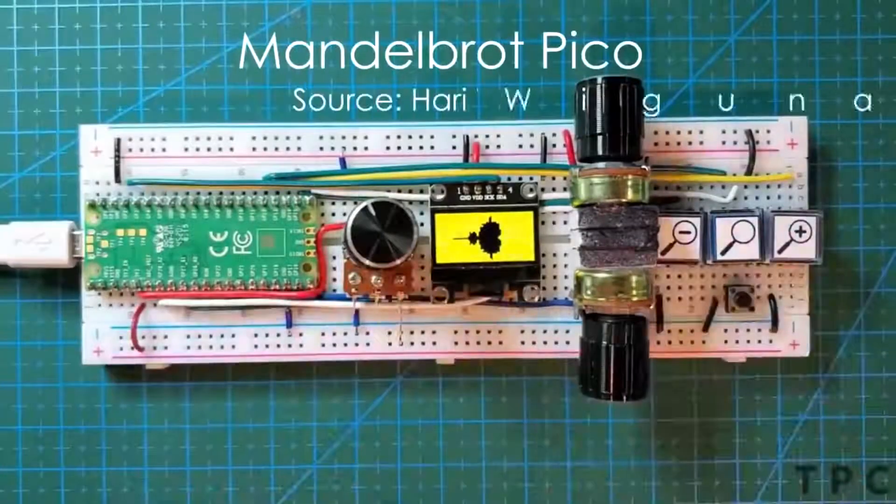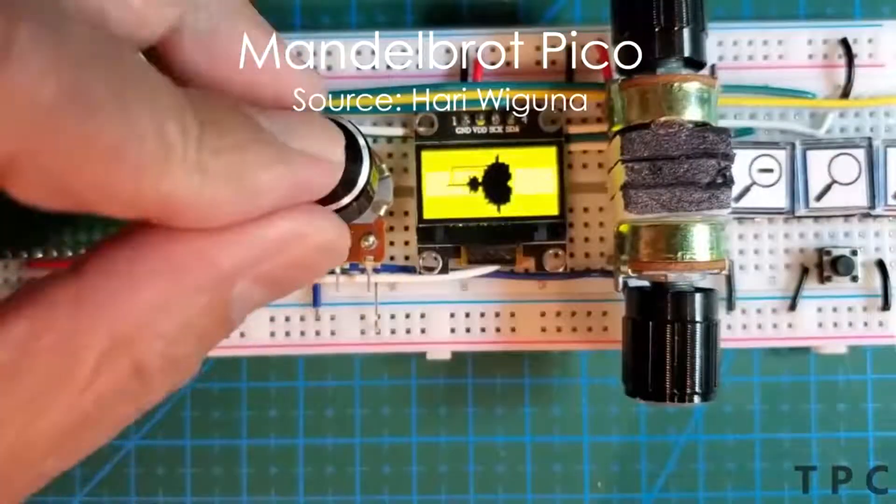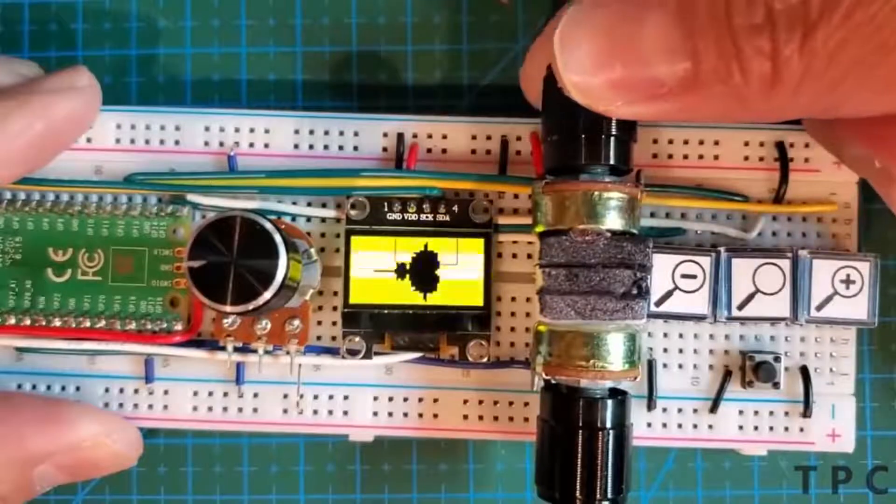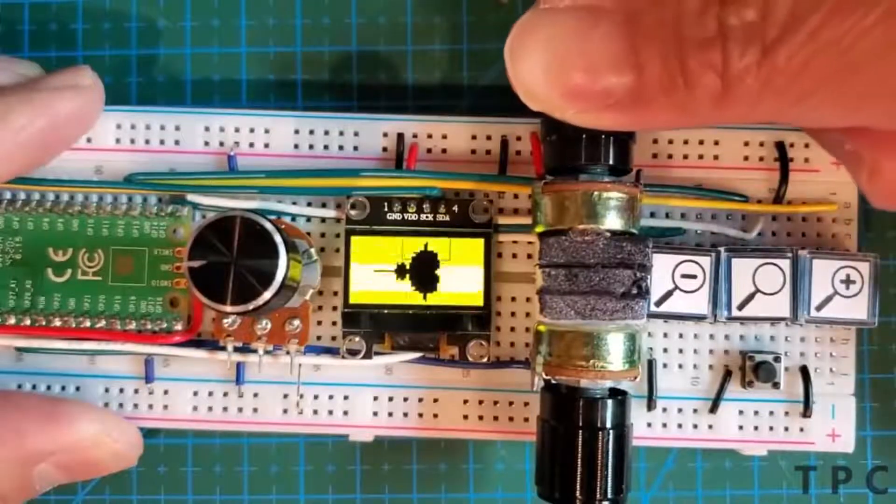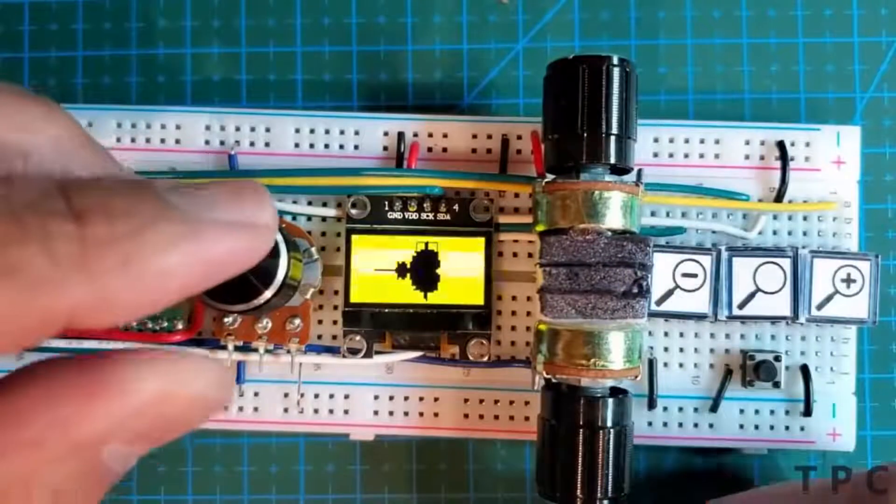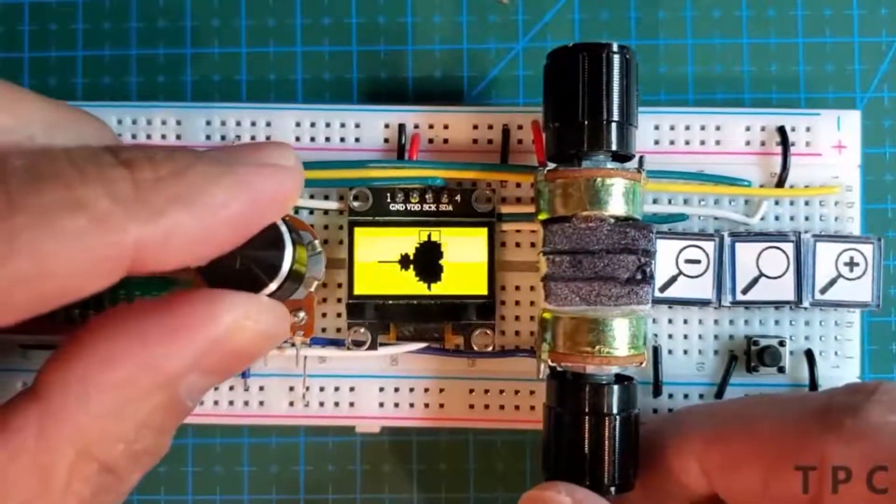This small setup draws a Mandelbrot on an OLED screen. Every single pixel in the image requires a lot of complex calculations, but don't you worry as Raspberry Pi Pico handles all the mathematics.